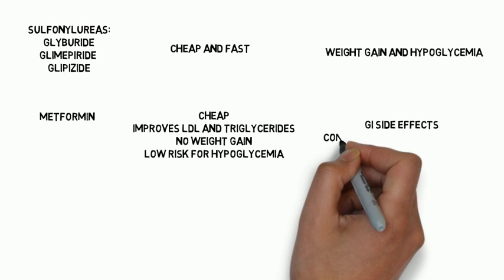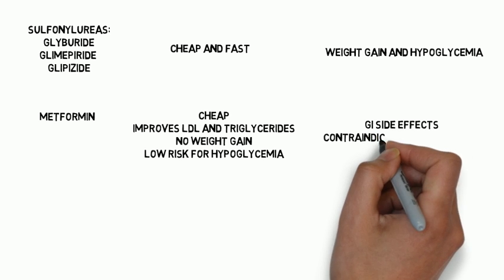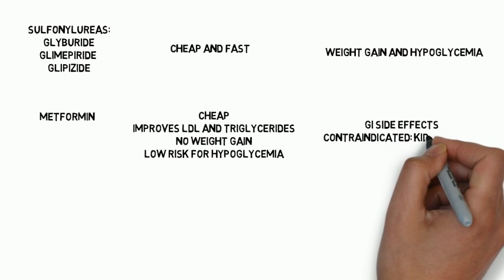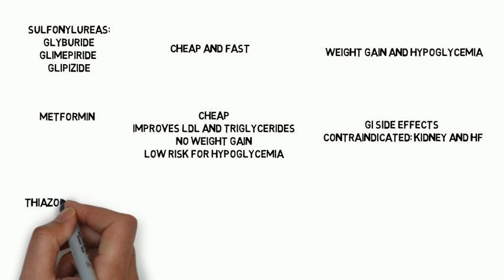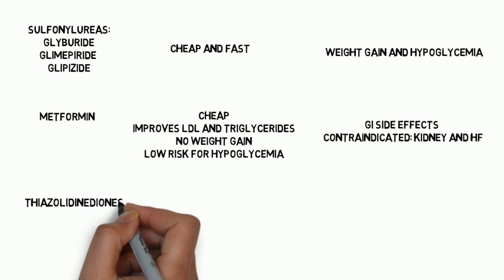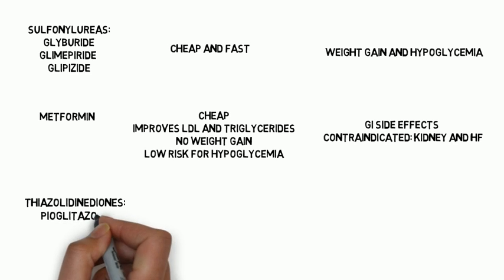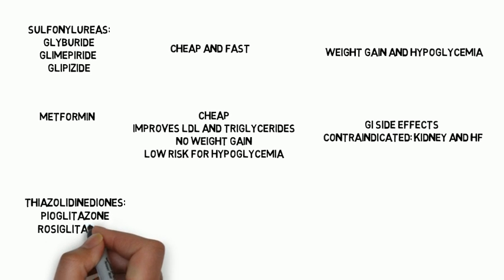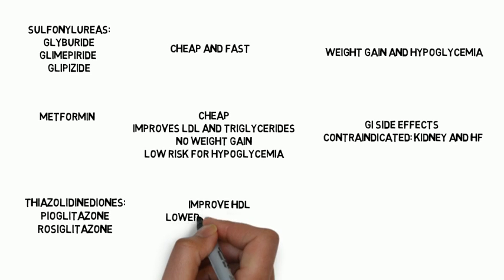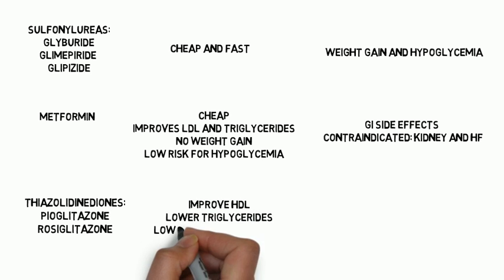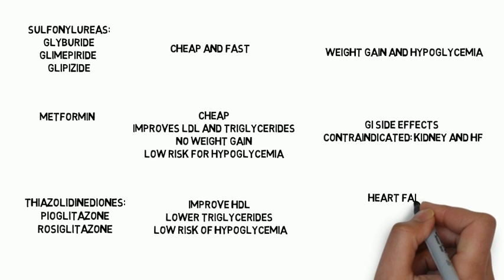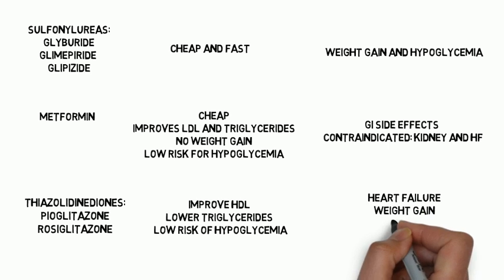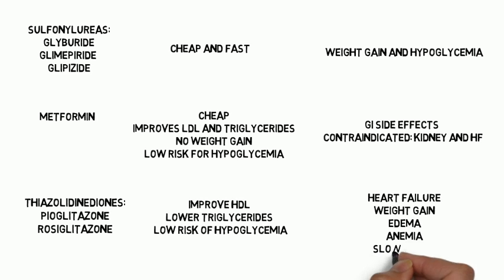Metformin does, however, cause significant GI side effects and is contraindicated in patients with moderate or severe kidney disease and heart failure. The medications pioglitazone and rosiglitazone reduce insulin resistance in fat and muscle. They improve HDL and decrease triglycerides and have a low risk of hypoglycemia. However, they do increase the risk of heart failure, cause weight gain, edema, and anemia, have a slow onset of action, and can actually worsen LDL.